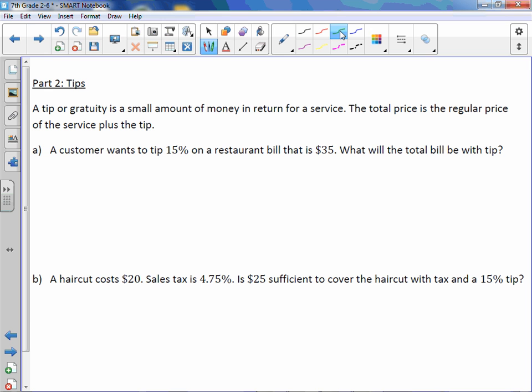Now let's talk about tips. The tip or gratuity is a small amount of money in return for a service. The total price is the regular price of the service plus the tip. We see this a lot at restaurants and they will put a tip line or a gratuity line. A customer wants to tip 15% on a restaurant bill that is $35. What will the total bill be with tip? So the bill is $35, that's the total amount.